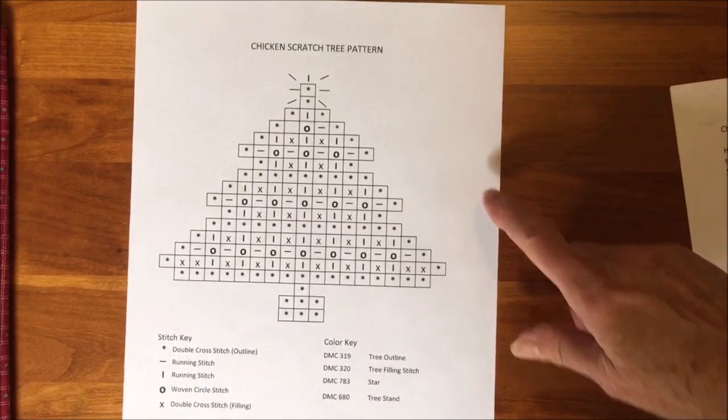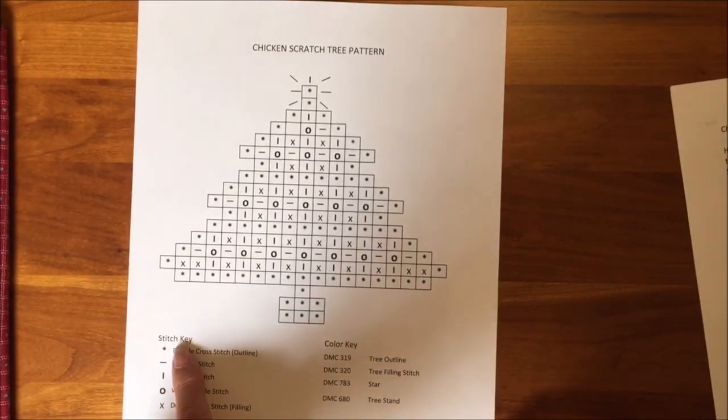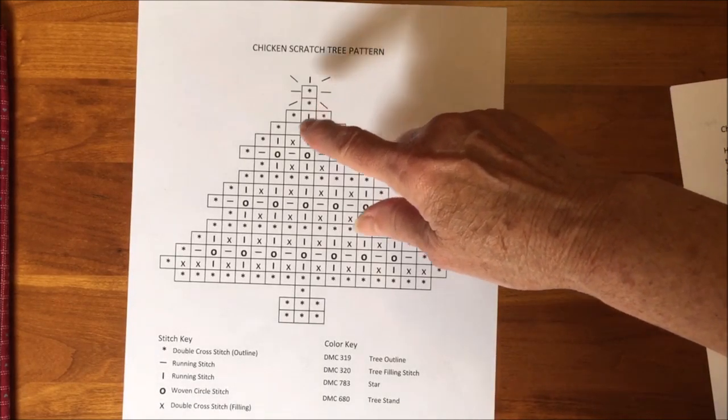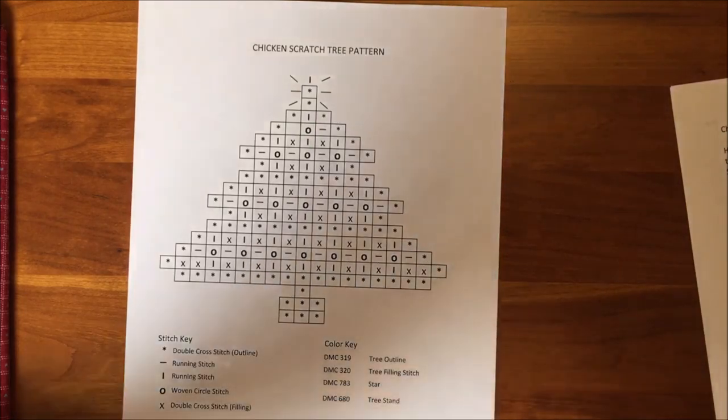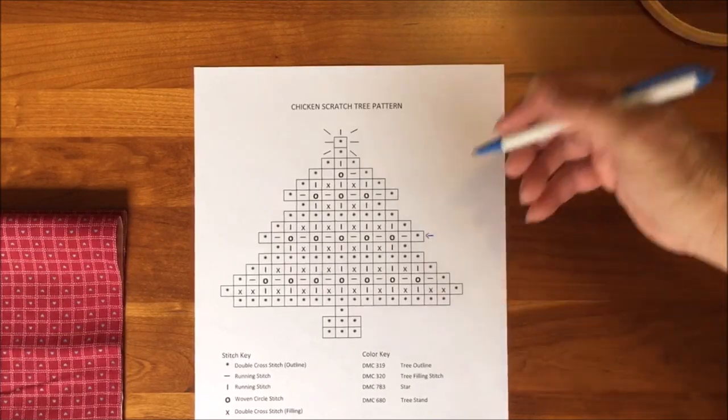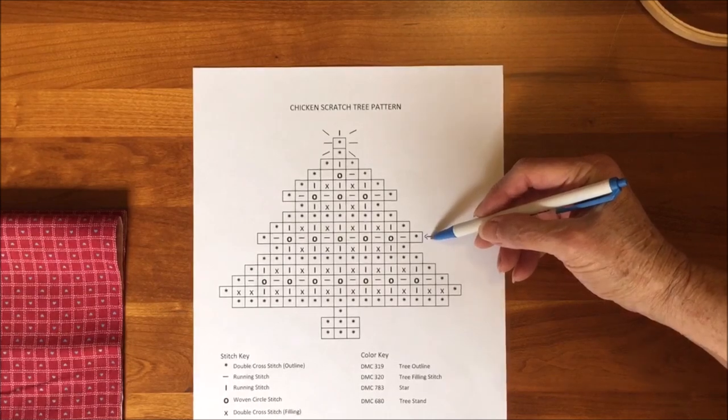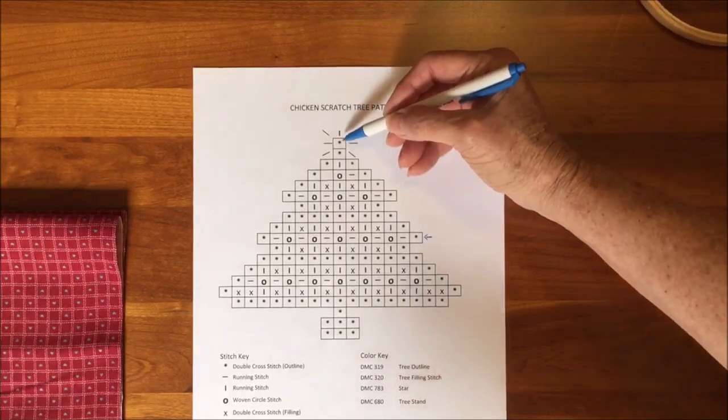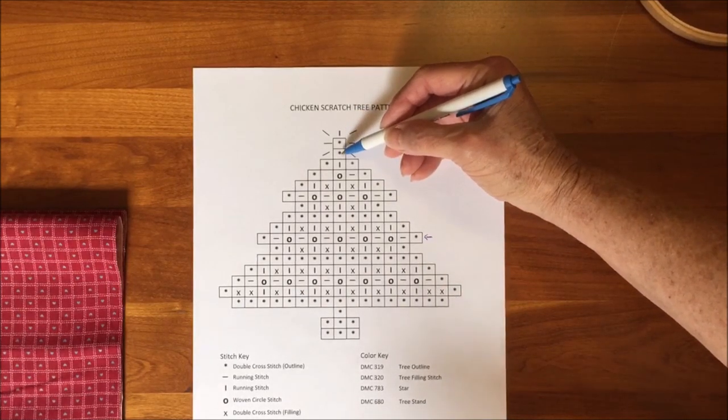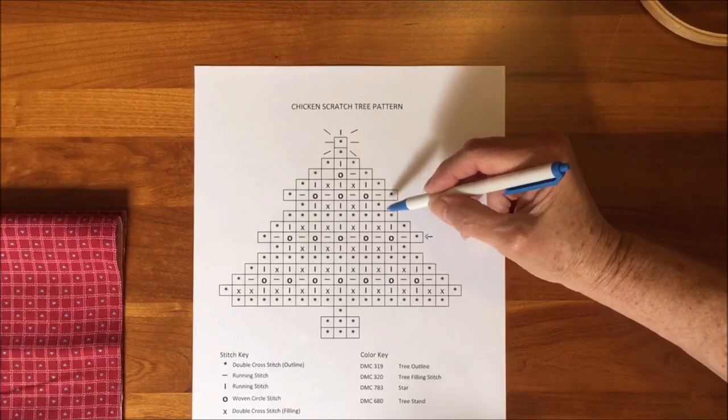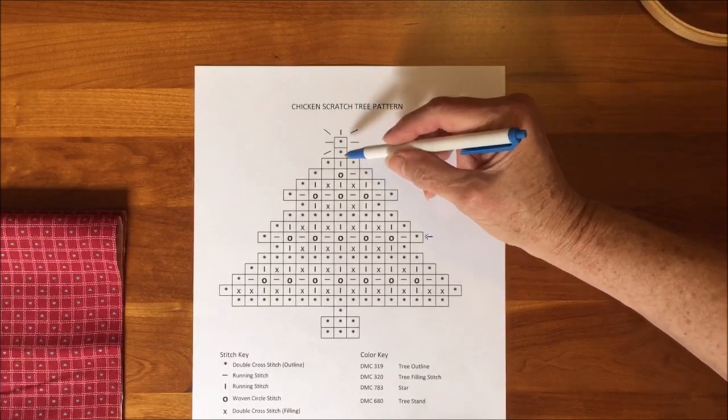After you download the pattern, take a look at it and you will see that it has a stitch key and also a color key. Of course you can change the colors if you'd like and then check out the pattern for what stitch you will be doing in each of the squares on the gingham fabric. The pattern consists of 19 rows. I have marked here the tenth row would be the middle and I would suggest that you start at the top of the tree. Now the very top one is a star so the top of the tree is right here. So from the middle of the fabric you want to count up one two three four five six seven eight rows.